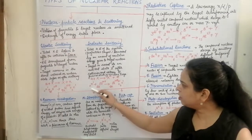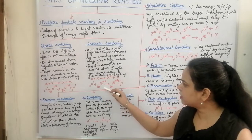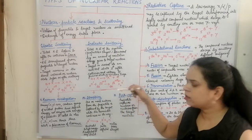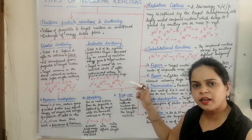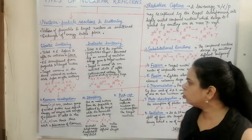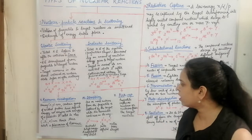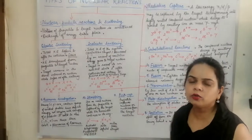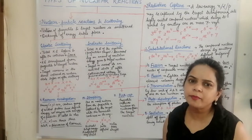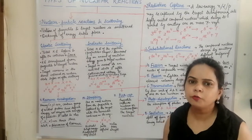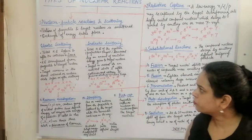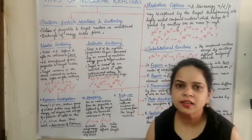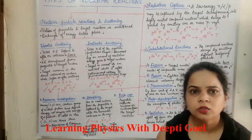For example, a neutron strikes lead, causing the lead to reach a higher excited state, and a neutron is also emitted again. The lead then returns to the ground state by emitting a photon. This illustrates elastic and inelastic scattering.